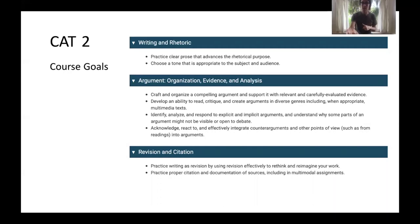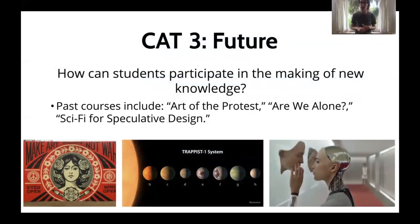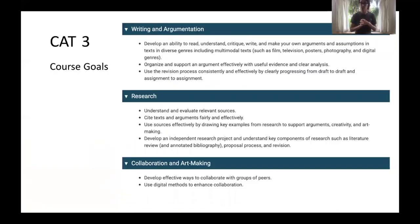CAT 3 is where we start doing research as we think about the future. All CAT 3 classes are set in the future. This year we're theming CAT 3 around issues of climate disruption. We have professors coming from theater, from Scripps Institute of Oceanography, and from physics, to think critically about the planet, the climate, and the future.